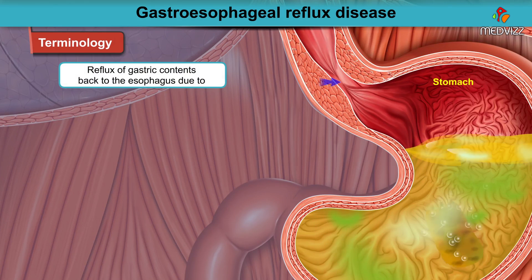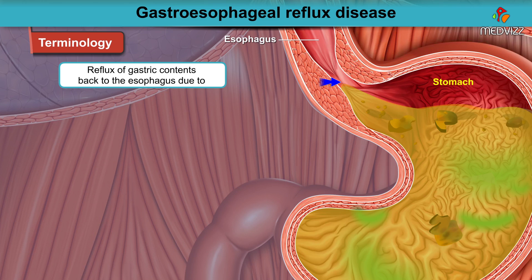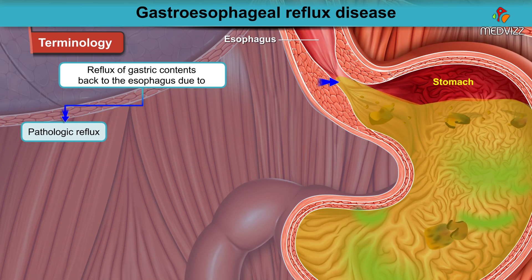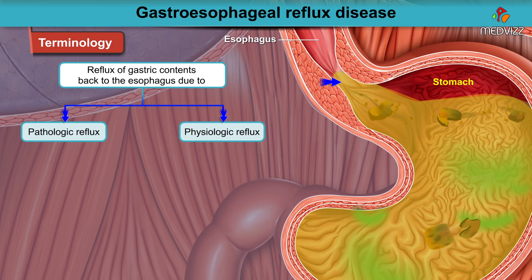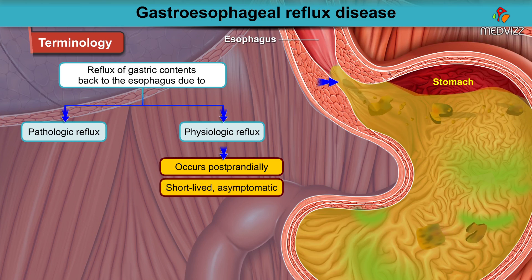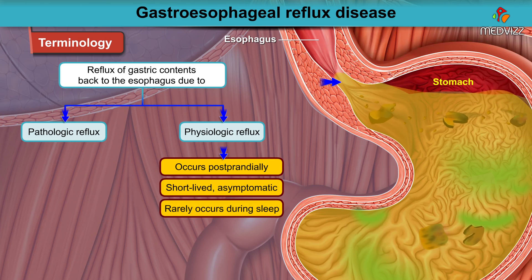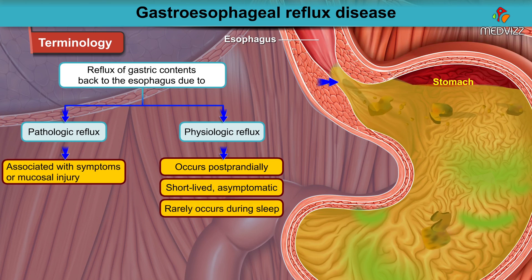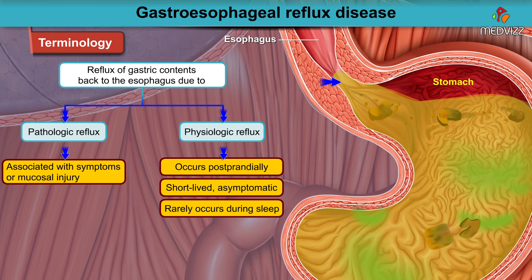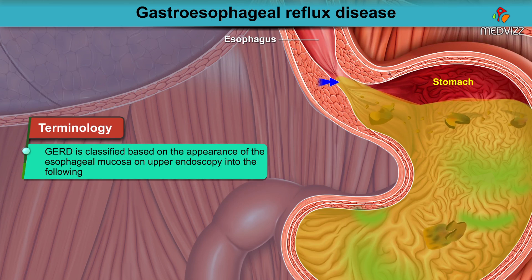When we talk about reflux of gastric contents back into the esophagus, it is not always pathologic, as some degree of reflux is physiologic. Physiologic reflux typically occurs postprandially, is short-lived, asymptomatic, and rarely occurs during sleep. Pathologic reflux is associated with symptoms or mucosal injury and often occurs nocturnally.